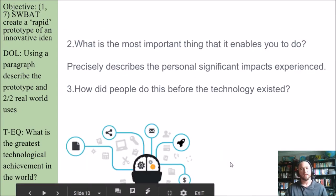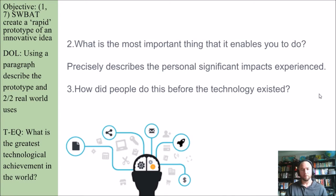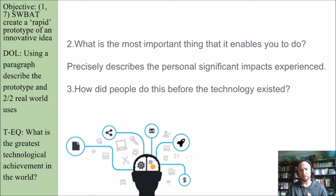Question two: What is the most important thing that it enables you to do? Precisely describe the personal and significant impacts experienced. Question three: How did people do this before the technology existed? Using the puppy example — how did people find their dog before? Well, they drove around the block, put out flyers on mailboxes, walked around looking for the dog, or put food out and waited for the dog to come back.